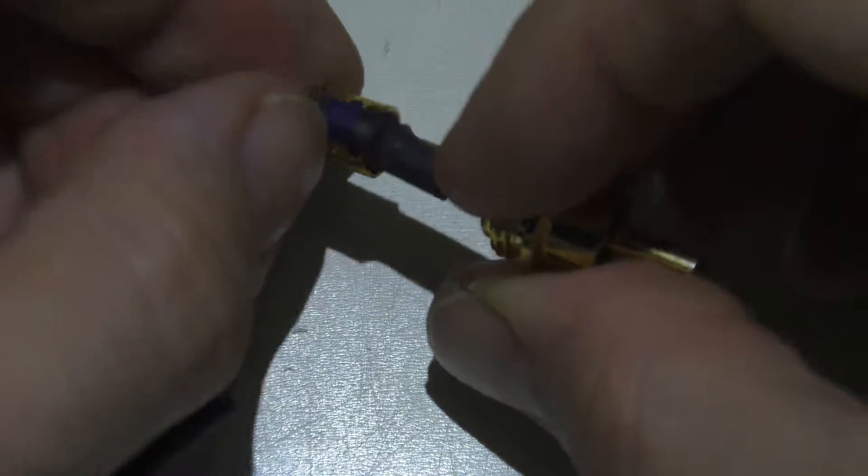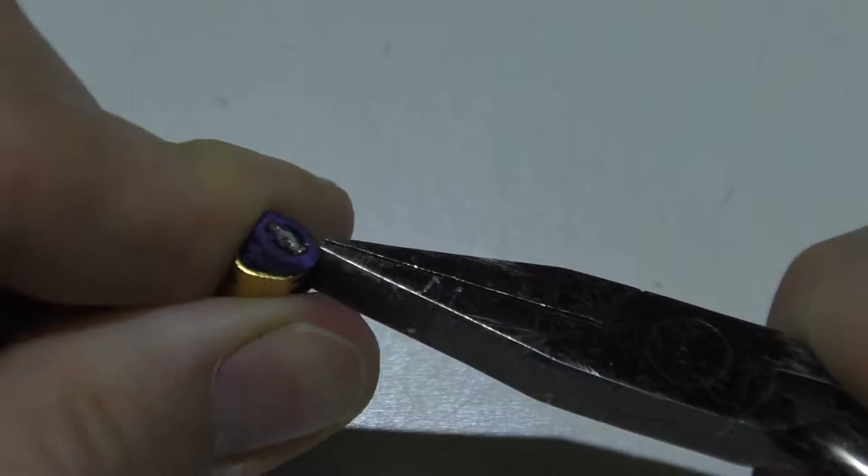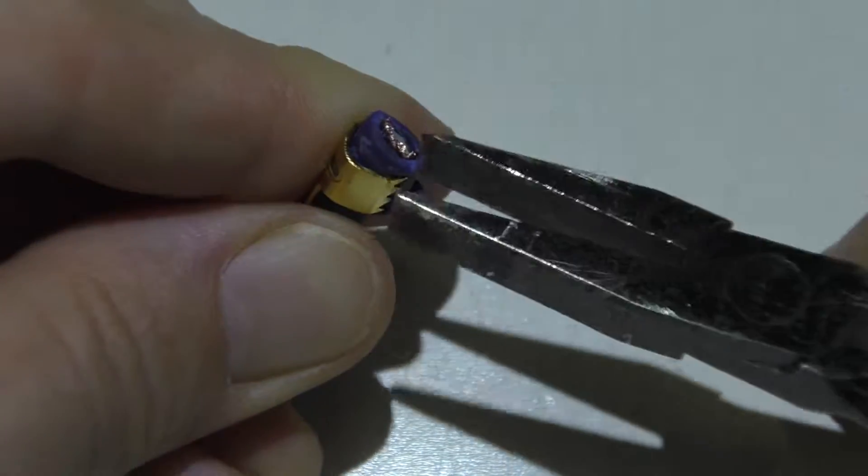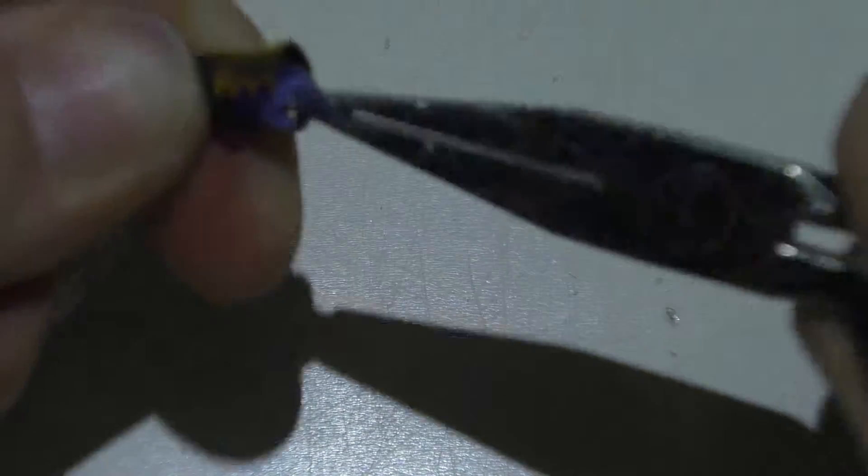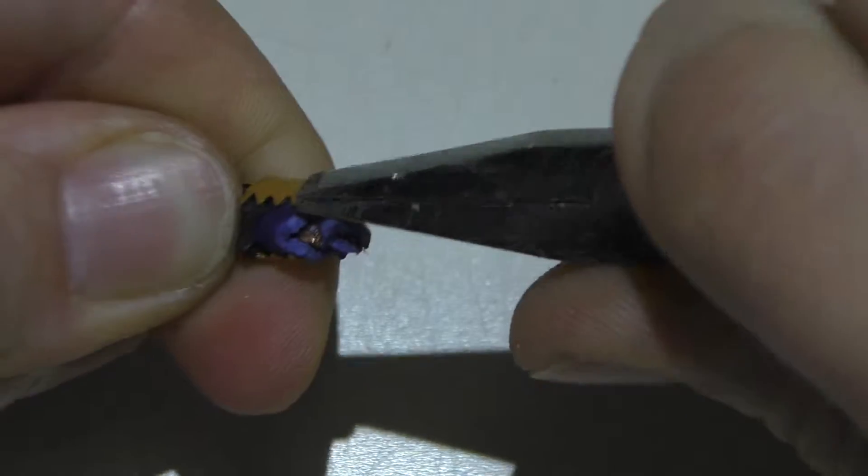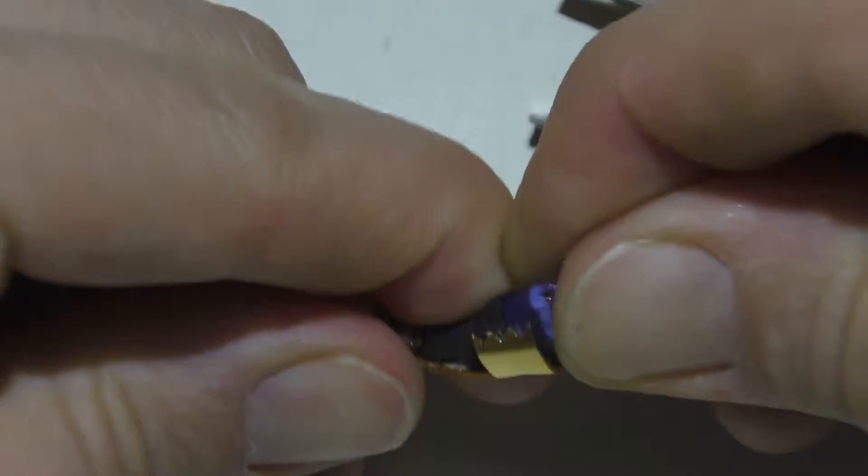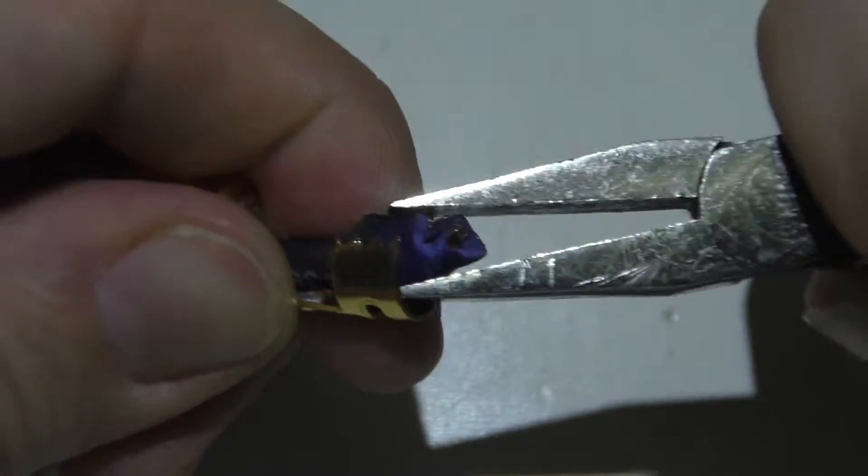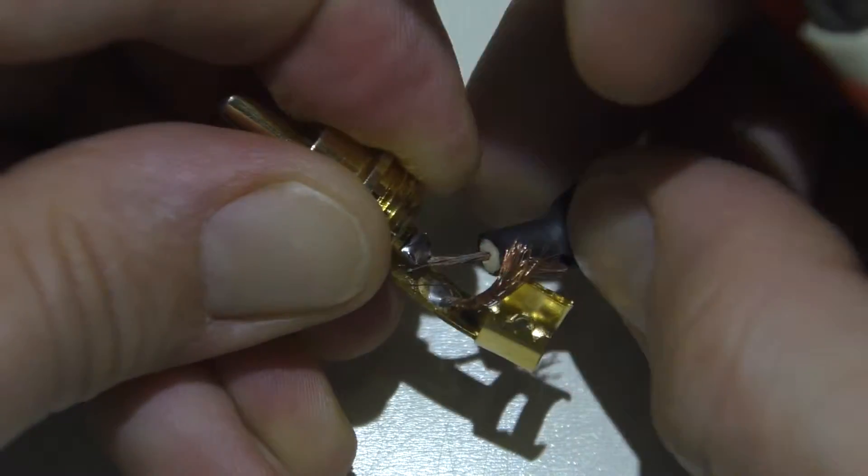On this end here, we just have to uncrimp this. Maybe we'll use a smaller pair of pliers. Like these guys here. Just kind of bend this back a little bit. I'll do this on both sides here. We might even be able to grab this wire. Maybe just a little bit more on this one side. Now you could buy new ends, but there's really nothing wrong with these ends. They're quite useful still. We just have to clean them up.